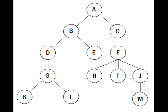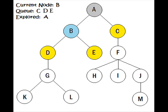Given this tree, we start at level 0 with node A, putting B and C in the queue. Moving to level 1, our current node is B. We add D and E to the queue, with node A now explored. Continuing through level 1, our current node is C, and we add F to the queue. Going down to level 2, starting at the leftmost node D, we put G in the queue.